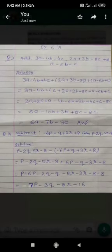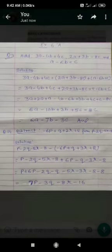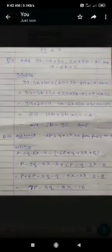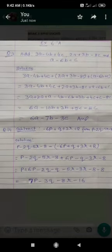Constant term: 8 plus 8 is 16, but sign is negative, then this is equal to minus 16. So your answer is 7P minus 3Q minus 8R minus 16. See the question.